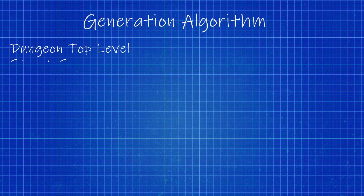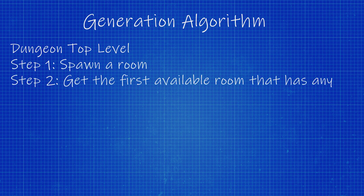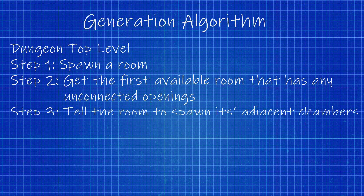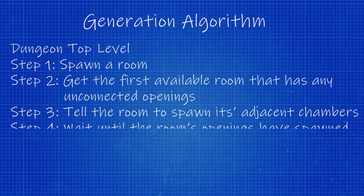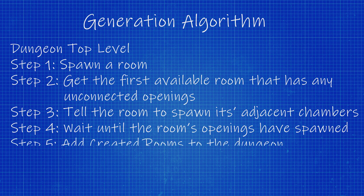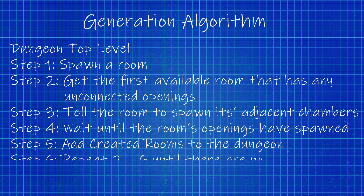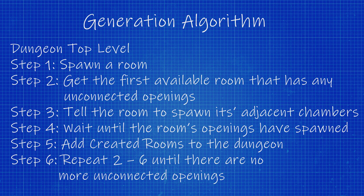Starting at the top level with the dungeon: step one, we spawn a room. Step two, we look at that room and ask — does it have any available or unconnected openings? If so, we tell that room to spawn its adjacent chambers. At this point the dungeon waits for the room's openings to be created. After all openings have spawned a room, the dungeon adds those rooms to a variable it's tracking. Then step six, it repeats steps two through six — finding the next available room with unconnected openings — until all rooms returned are closed off.